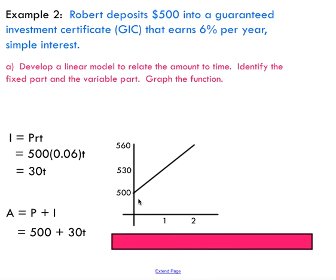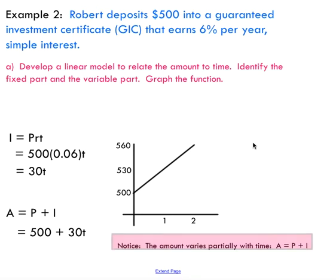Plotting that on a graph, you can see that over time his amount increases linearly — no surprises there. We're varying partially with time because we have a y-intercept value that is not zero. That gives us a nice linear model for this situation.